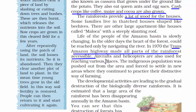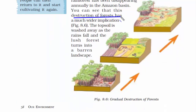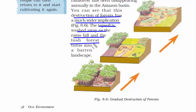Aircraft and helicopter services are also available for reaching various places. Nowadays, a large portion of the rainforest has been disappearing annually in the Amazon basin. Due to development activities, the ecosystem is getting destroyed, and with destruction of forests, rain washes away the topsoil, which can leave the land good for nothing. That was all about the Amazon basin.